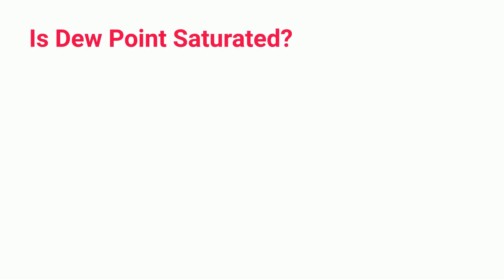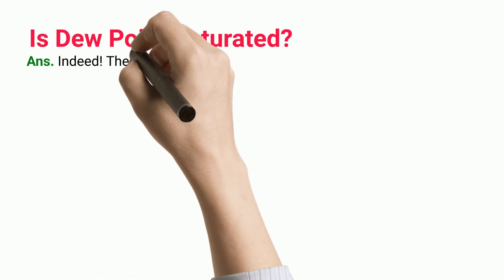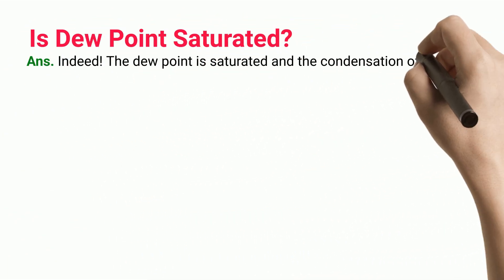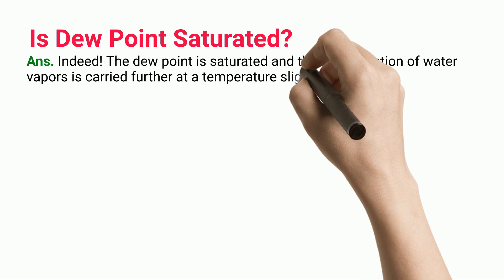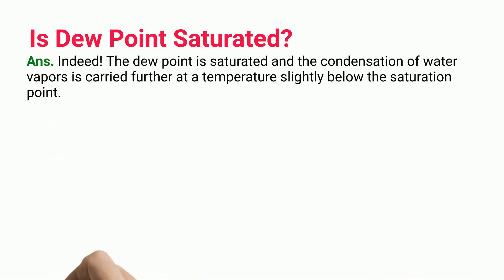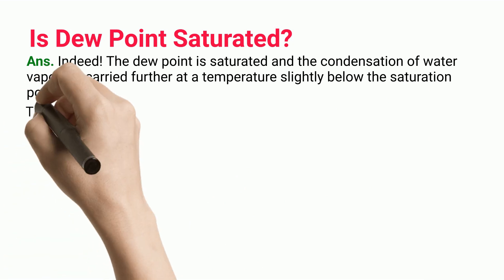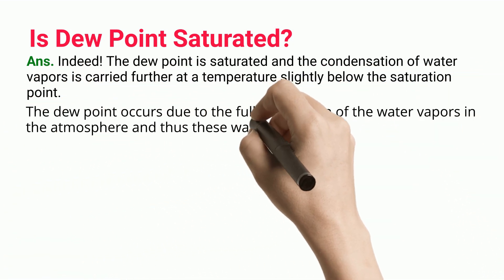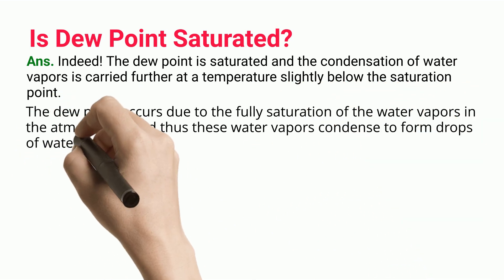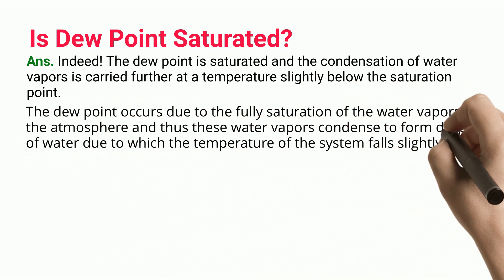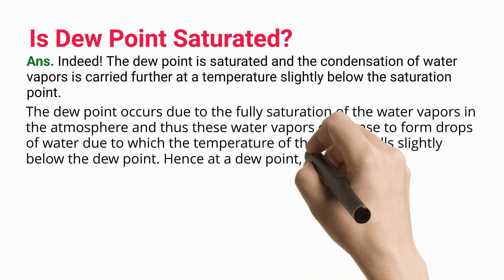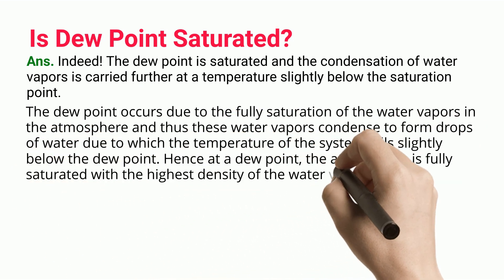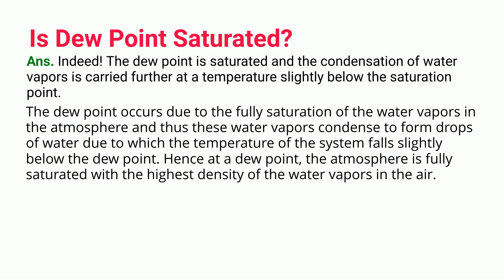Is the dew point saturated? Indeed, the dew point is saturated, and the condensation of water vapors is carried further at a temperature slightly below the saturation point. The dew point occurs due to the full saturation of water vapors in the atmosphere, causing them to condense and form drops of water. Hence at the dew point, the atmosphere is fully saturated with the highest density of water vapors in the air.